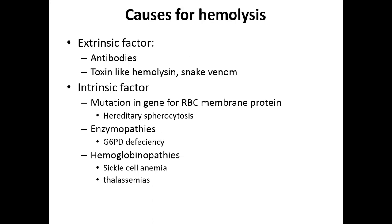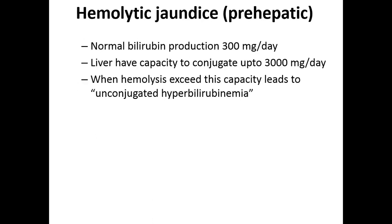So the basic thing to remember in case of hemolytic or pre-hepatic jaundice: hemolysis occurs, causing more bilirubin formation that exceeds the liver's conjugation capacity, leading to unconjugated hyperbilirubinemia, also known as indirect hyperbilirubinemia.